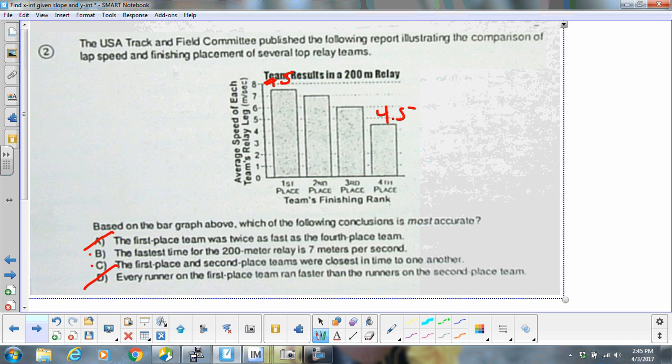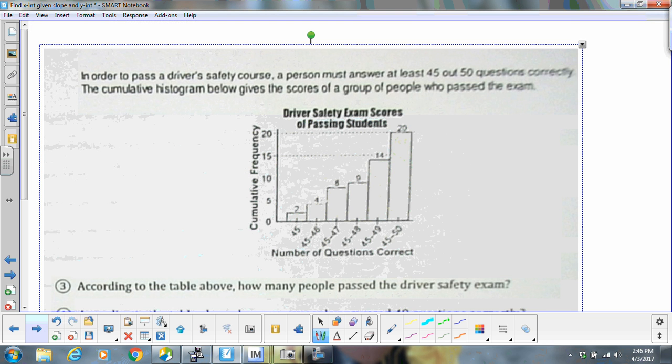So we're down to B and C. The fastest time for the 200 meter relay is 7 meters per second. First place team and second place teams were closest in time to one another. I'm going to go with C. Because the 7 meters, we know it is fast, it is more than 7 meters per second.